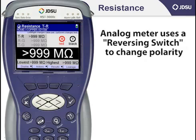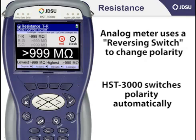I often ask technicians if they ever encounter a fault with their analog meter where, say for example, the line shows there's a ground on one side, but when they switch polarity with the meter, the ground goes away. The polarity switching is often done with a switch on the side of the analog meter called a reversing switch, which actually reverses the polarity of the internal battery of the meter so they can see it. I call that type of fault a diode fault, that allows current to flow in one polarity but blocks current in the opposite polarity. The HST automatically reverses polarity in the background, so the chance of getting fooled by a diode type fault is minimized if not eliminated.